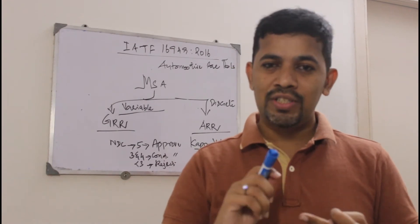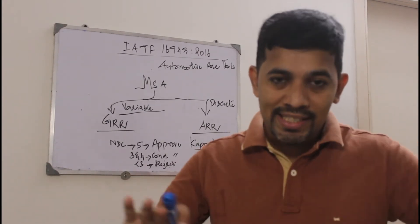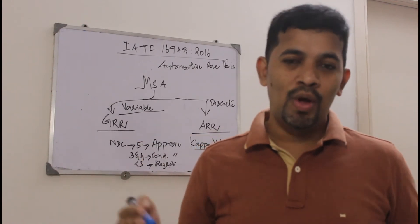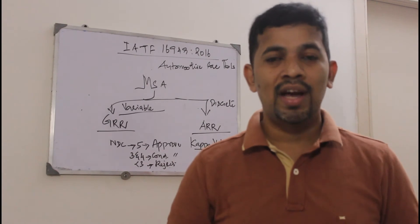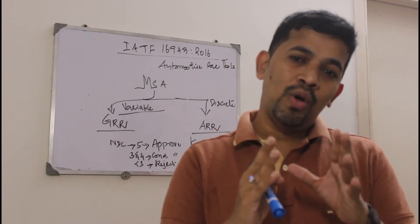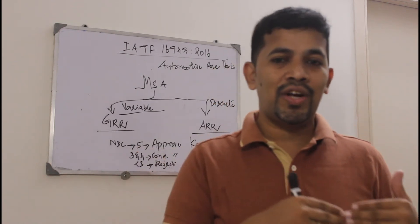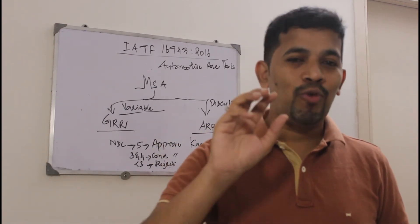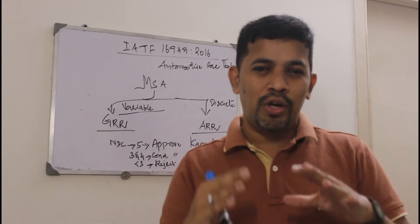For NDC values of 3 to 4, there are two things you can do: first, check what your organization's documentation says. If it says to reject, you must reject. In some cases, you can conditionally approve with the help of the quality team, management, or by raising a concession or deviation. For safety-critical processes, if it violates regulatory requirements, you cannot approve.